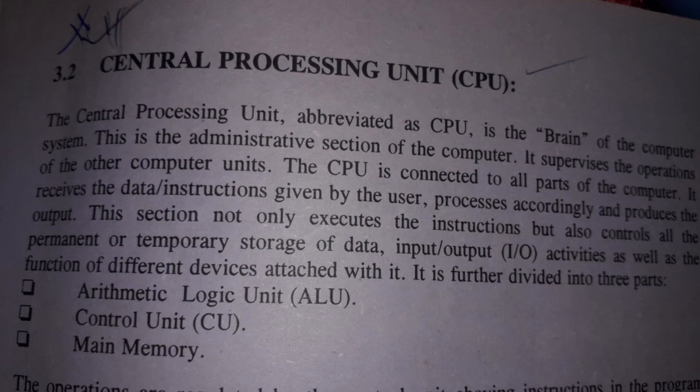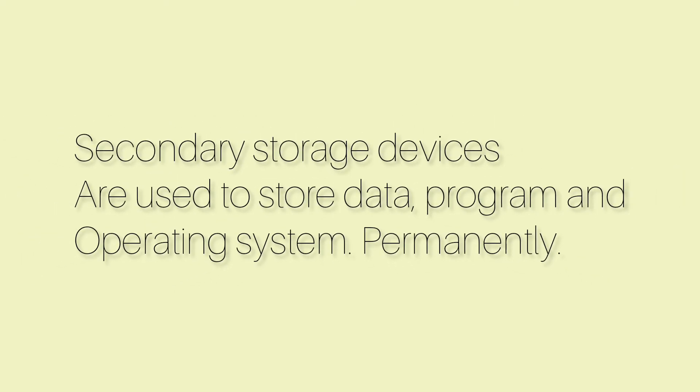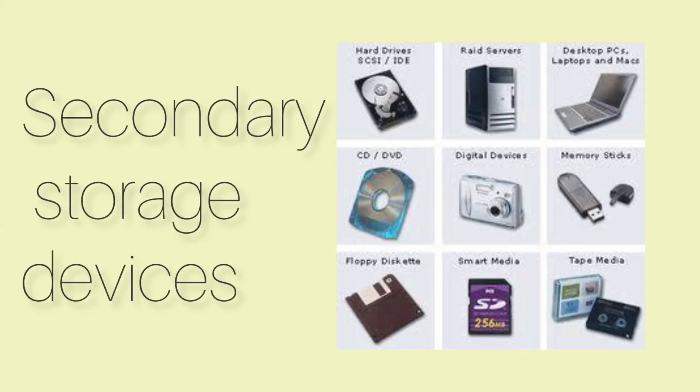There are three parts of the CPU: Arithmetic Logic Unit, Control Unit, and Memory. The computer must have some source of storing data and programs so that data, programs, and other application programs can be stored permanently.